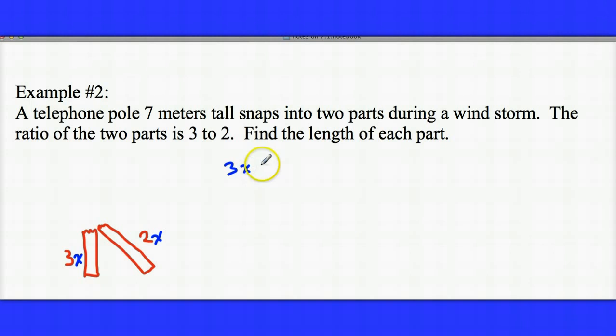In other words, 3 parts plus 2 parts has to equal 7. That's going to be our equation for this. And this is a pretty easy equation to solve. We're going to combine like terms, so 3x plus 2x equals 5x. And then we'll divide both sides by 5.